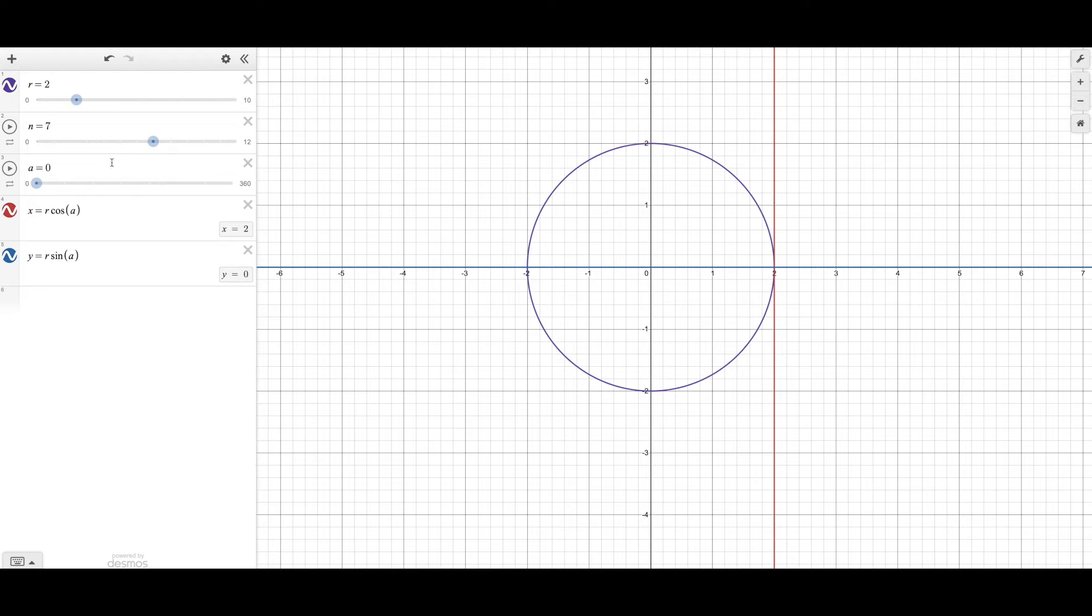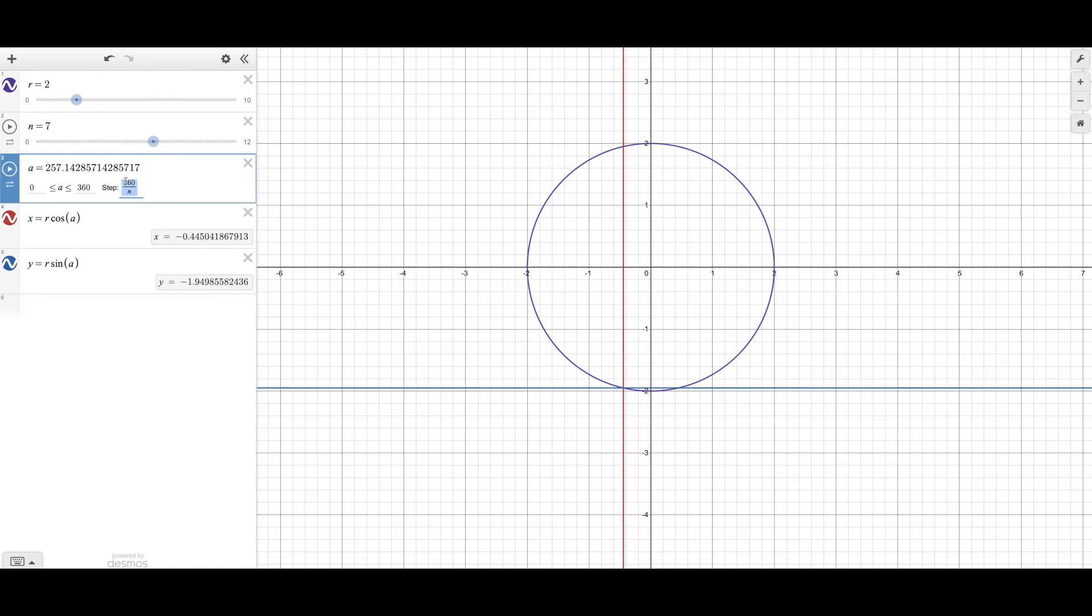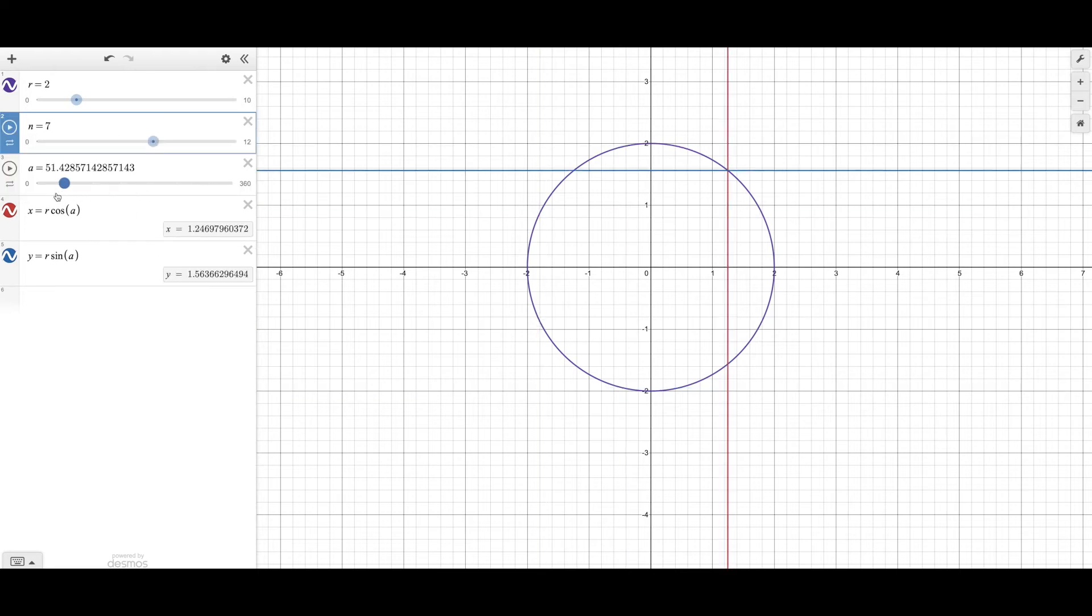Then there's a, which is the angle that the engine is on. But I've got it so that it slides and it clicks to each one for you, so you don't have to work out with trigonometry to figure out, or not trigonometry, just 360 divided by the number of engines, what angle that it's going to be at.